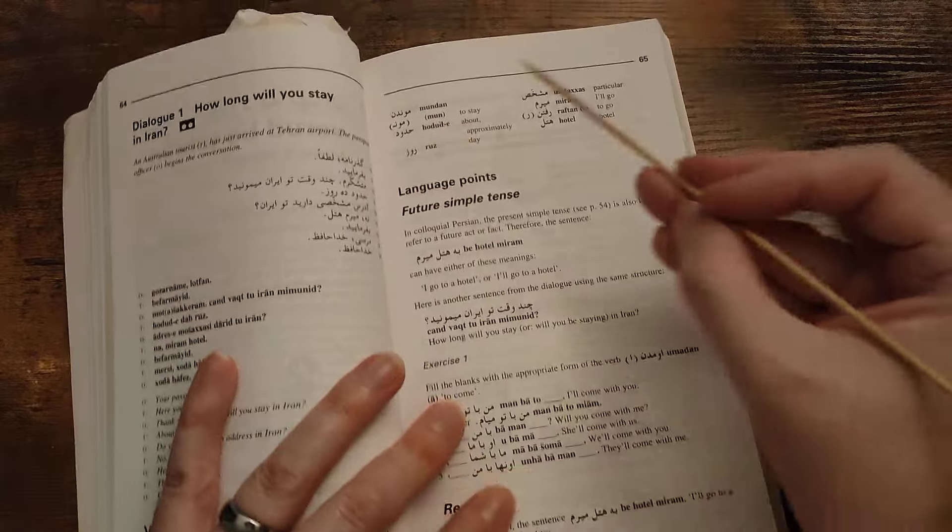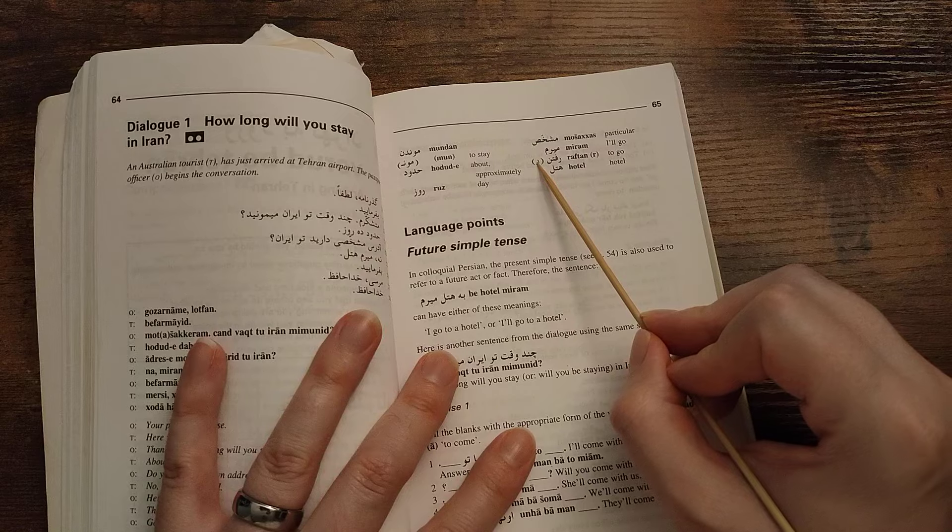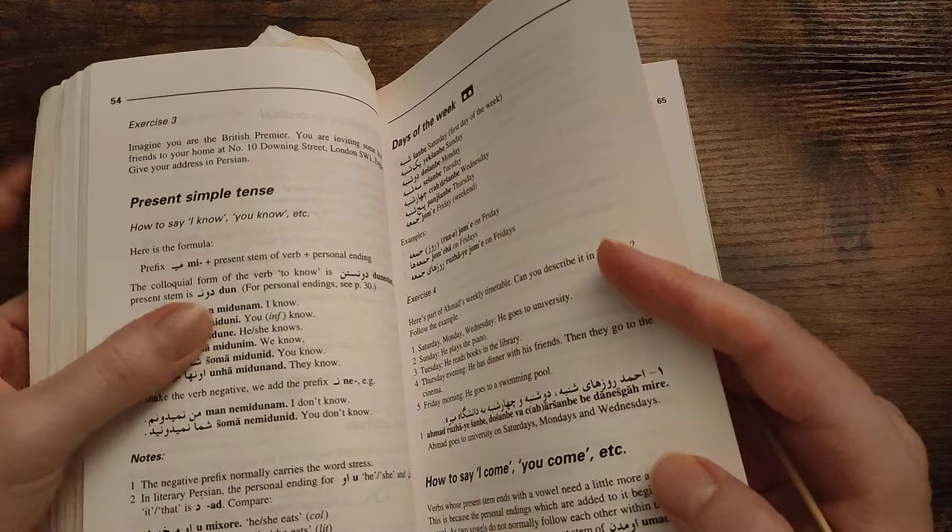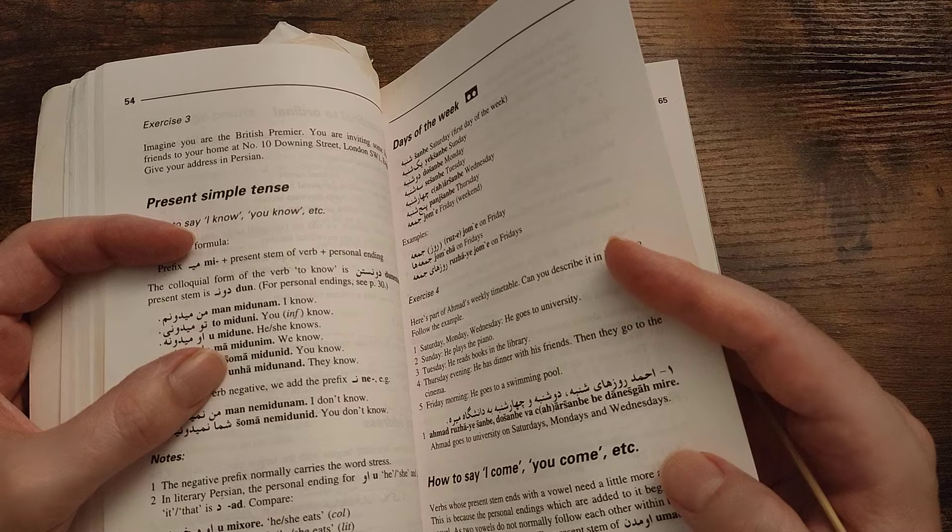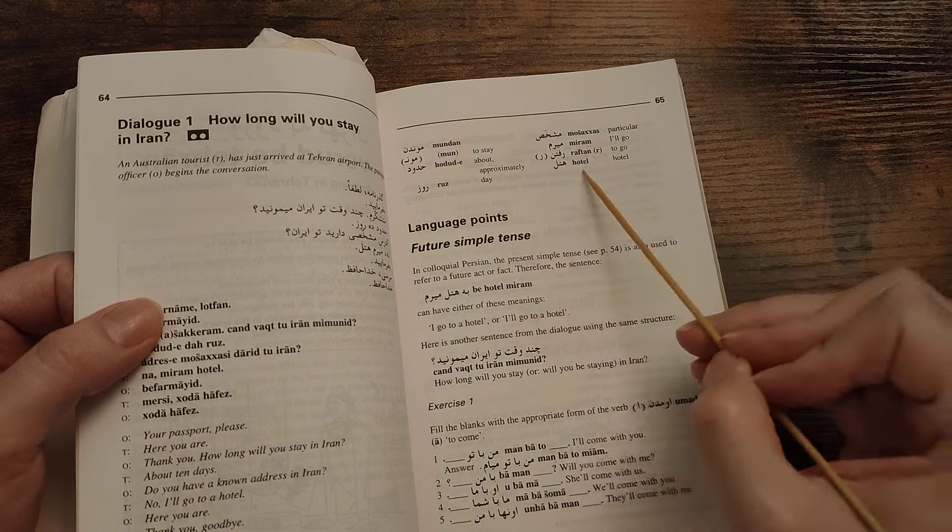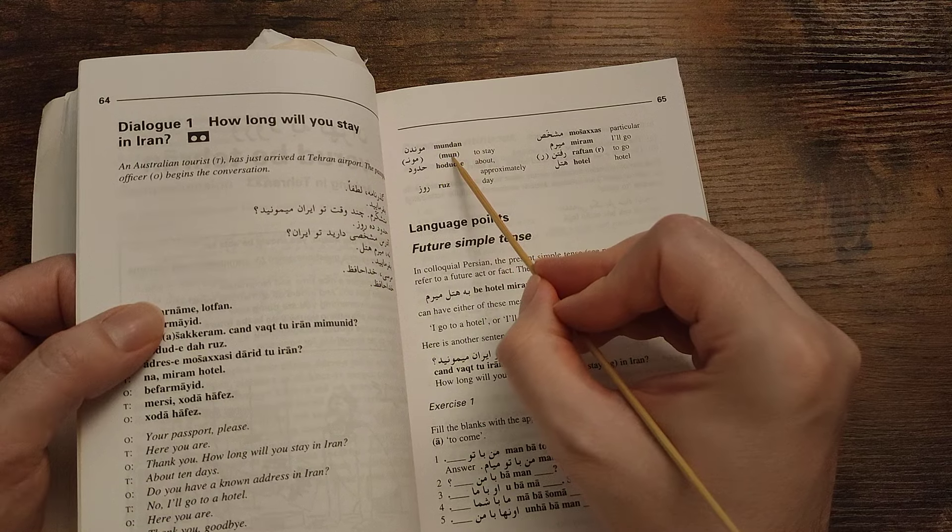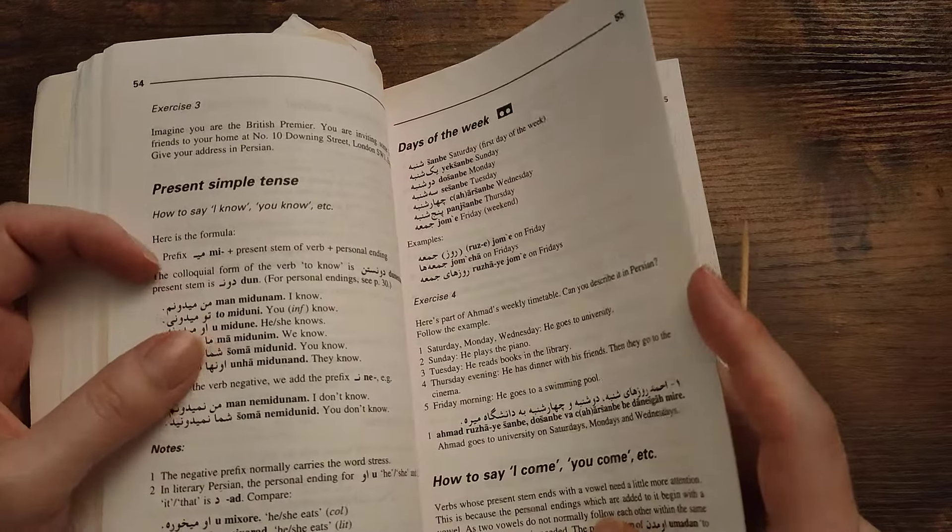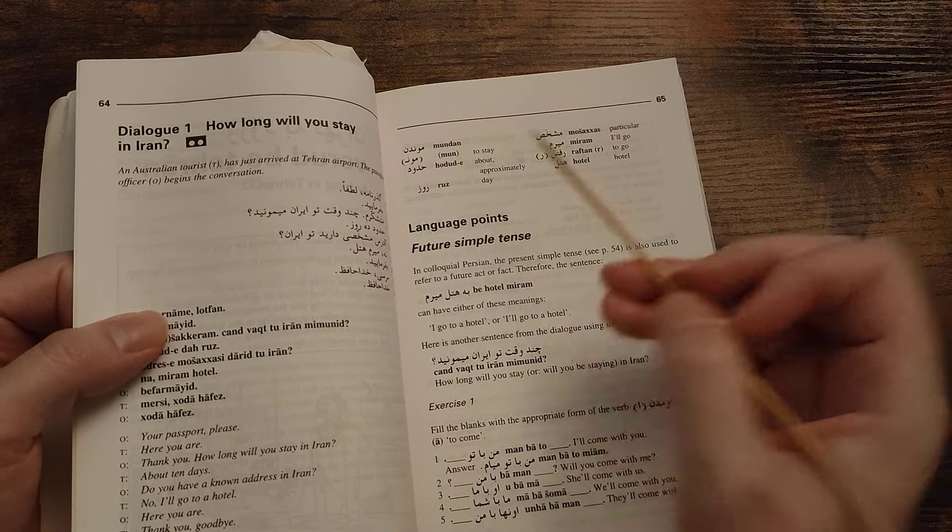Let's just see if I can... So raftan to go is just r, so miyam, miravi, mirad. But the logic of this, miyadu ni, so miyiri, miyere, miyrim, miyrid, miyrand. And then mandante, so mundan miyunam, miyuni, miyune, miyunim, mimunid, mimunand. Okay, I feel a bit better now practicing that.